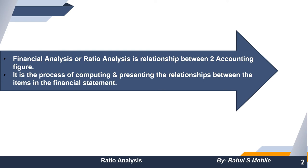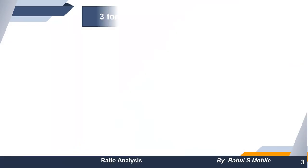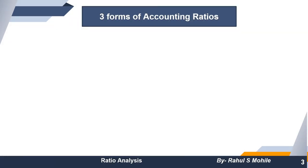Whatever points we are presenting in the profit and loss — that is the income statement — and whatever assets and liabilities we are presenting in the balance sheet, all these points are interrelated. We compare them for interpretation. Basically, all these things we study in three forms — there are three forms of accounting ratios.